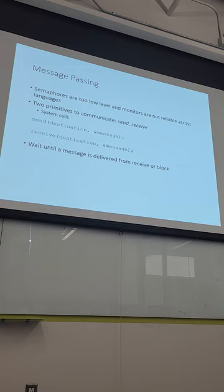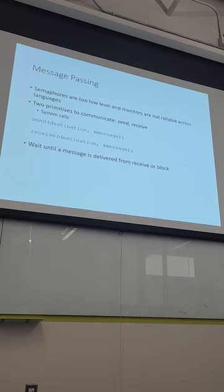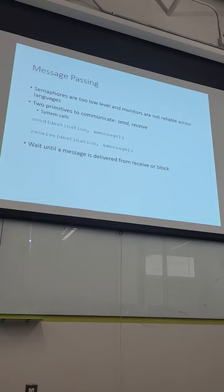Message passing has two primitive calls: send and receive — these are system calls. You do a send to somebody with a message, and then you can receive. You have some shared pipe or shared thing to get a message. You'll end up waiting until you receive the message, so you're basically in a blocked state. As soon as the other side sends, then you're good to go; until then, you're in that blocked state.